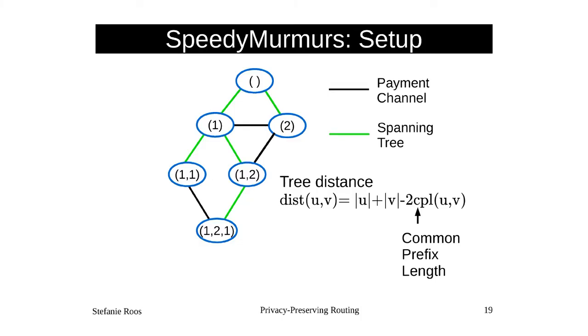The nice thing is we can now define a distance function in these coordinates: the length of the two coordinates minus twice the common prefix length, where common prefix length is how many leading elements the two coordinates share. This is exactly the same as the number of edges you have to walk along to get from one node to another in the spanning tree.